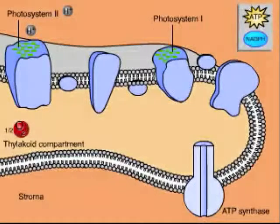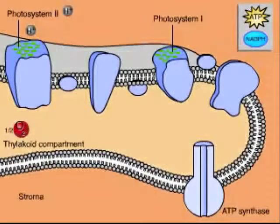Next, ATP and NADPH are used in the sugar-making process of the Calvin cycle.